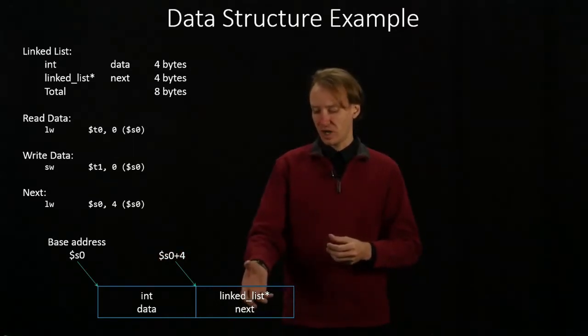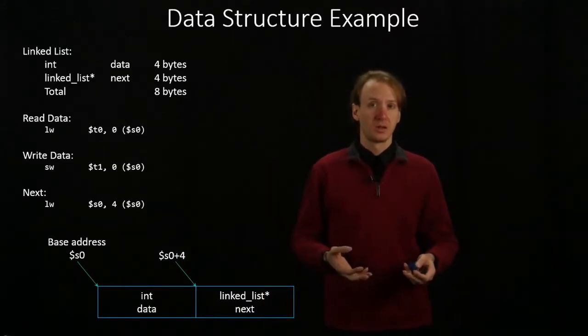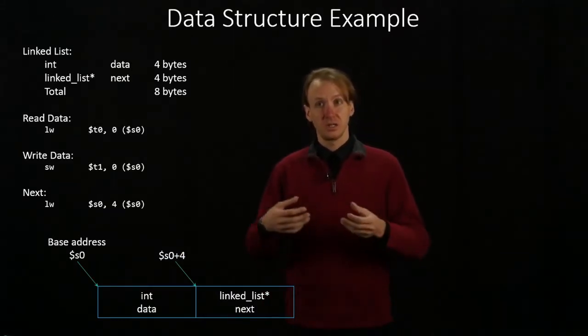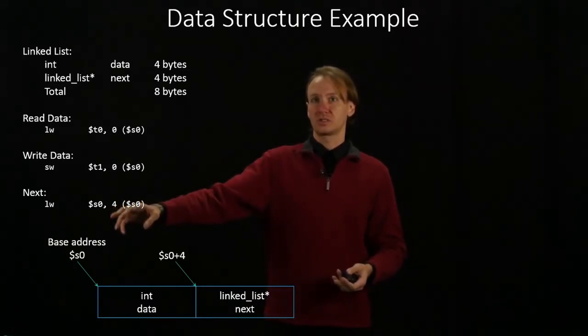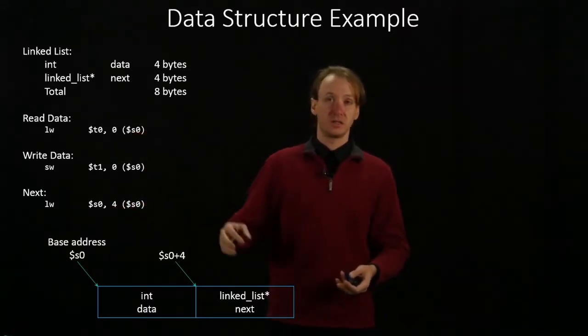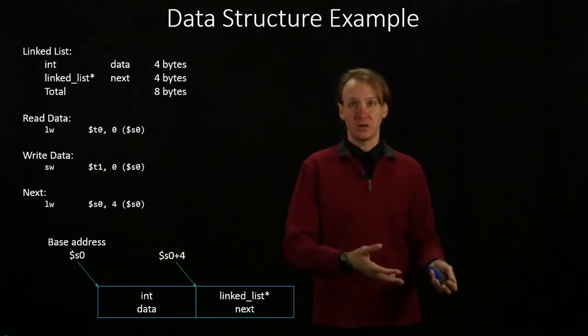This is just going to be another address telling me where another data structure is in memory. So I'm copying that address into S0 so I can use S0 as a pointer. It will work exactly the same as it did in each of those cases, and I'll be able to access the next element in my linked list.